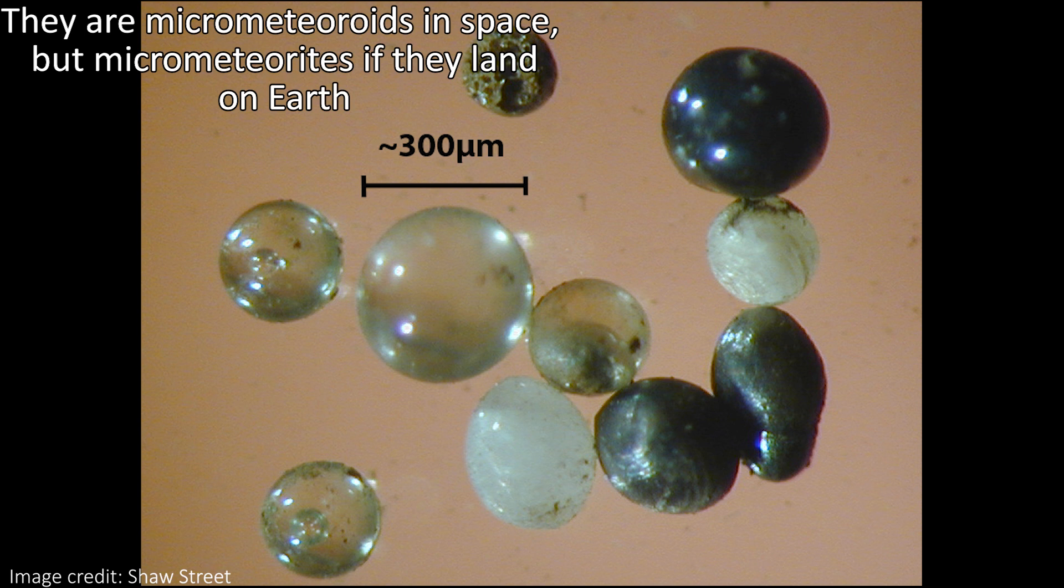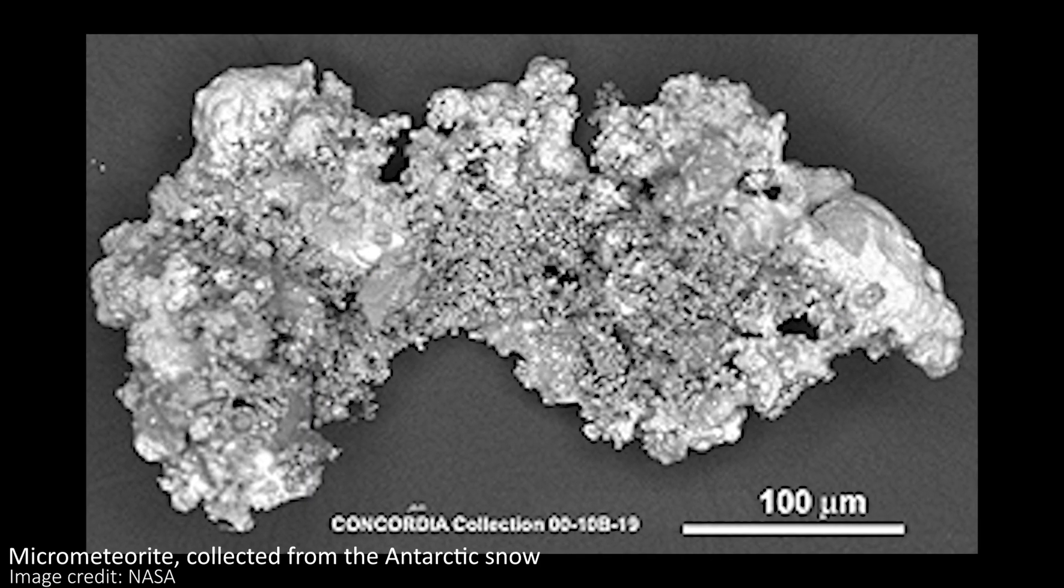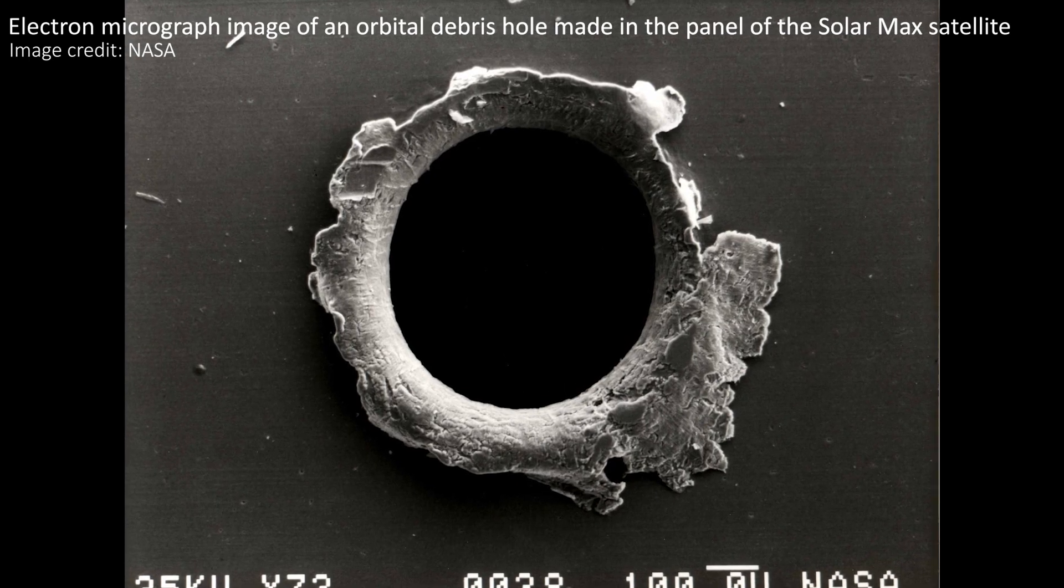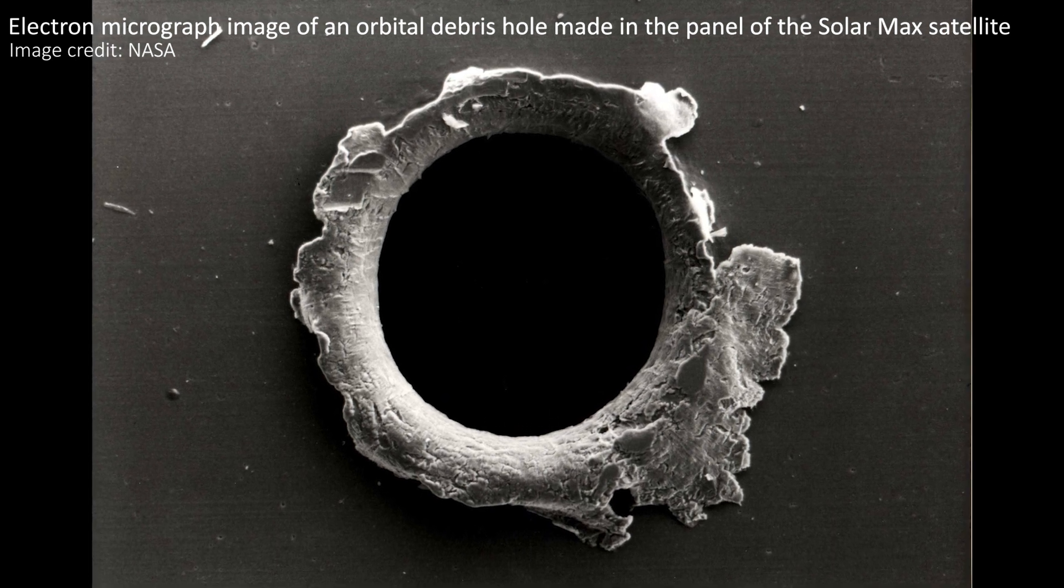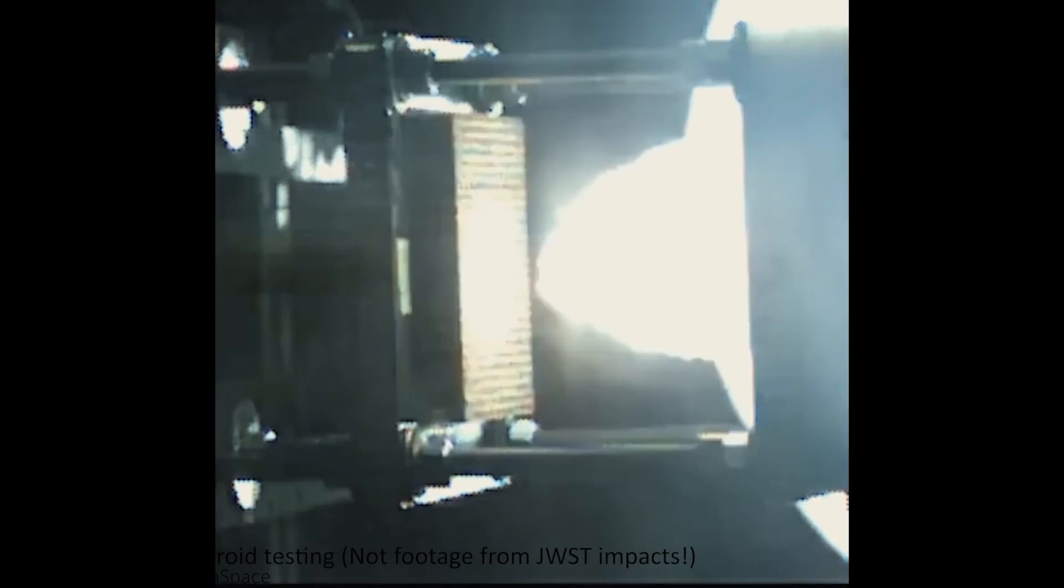Micrometeoroids are just dust-sized particles in space, but since there's no air resistance in the vacuum of space, they're almost always moving incredibly fast, with nothing to slow them down except big old telescopes. This means that when they hit the mirror, they impart a lot of energy onto it and they can do real damage.